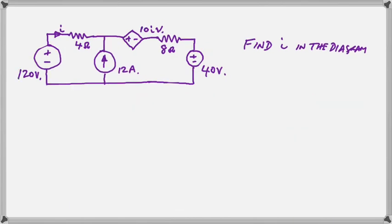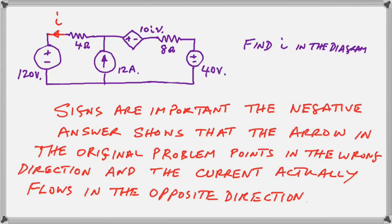So what is the meaning of that? Well, if we look back at our original diagram and we know that the sign indicates the direction of current, it means that the original I is in the wrong direction. So we realize that the signs are very important and that the arrow in the original problem was pointing in the wrong way. So the actual flow is in the opposite direction.